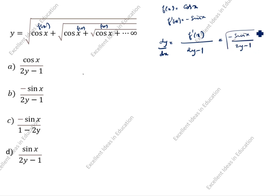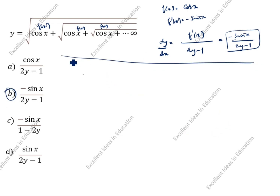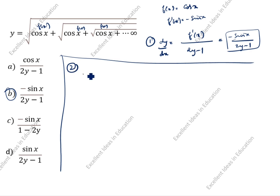This is the answer using the formula method. Now we will verify using the differentiation method. y is equal to √(cos x + √(cos x + ...)).